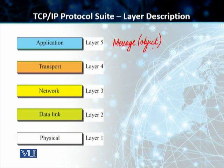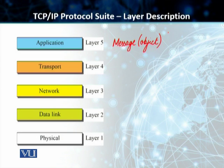Students, hypertext transfer protocol — HTTP — is used on this layer when we access the worldwide web or the internet. When you write an email, you use SMTP, the simple mail transfer protocol. You use FTP when you transfer a file from one system to another. So all of these protocols exist at the application layer, and the list goes on.